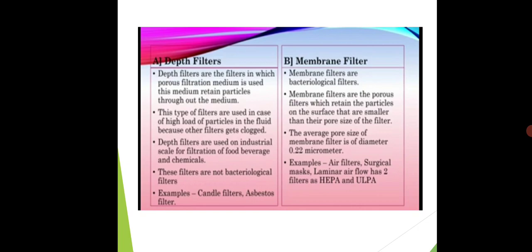Candle filters are used in order to remove turbidity from water. Asbestos is a naturally occurring silicate mineral, and its application is the same as that of the candle filter. It is used for the purification of water which can ultimately be used for drinking purposes. That covers depth filters. Next is the membrane filter.